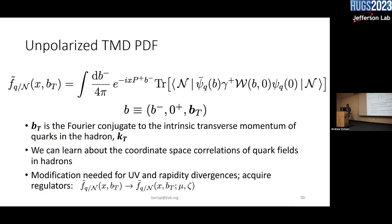We don't really think of PDFs in terms of their B minus components, but it's much easier to do all the evolution for PDFs because it's a single scale problem. Here in TMDs, it's a two scale problem. So it's important to consider also the BT. A lot of my results that I'll be showing are about the TMDs in BT space, not so much TMDs in KT space. There is a Fourier conjugate — you can define your TMD as X and KT, then do another Fourier transform with respect to BT.